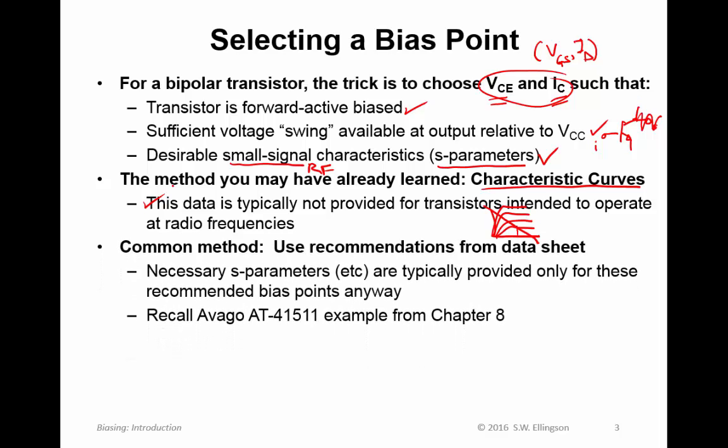The more common method, by far the most common method, is to use recommendations from a data sheet. Typically what happens is you choose a transistor that will accommodate your application and the data sheet will suggest some choices for the bias point and it will also list S-parameters for those particular choices. An example of this is the Avago AT41511 which we discussed in a previous lecture. In that case, the data sheet lists a few bias points and provides S-parameters for those bias points. If you have any other bias point that you'd prefer to use, well you have to do something else to get those values.